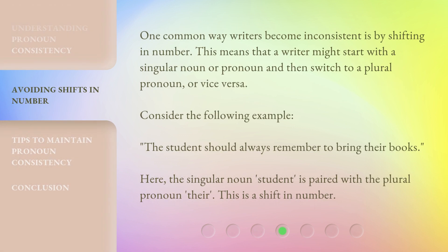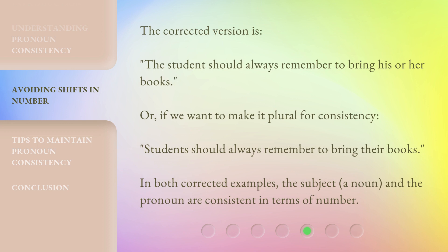One common way writers become inconsistent is by shifting in number. This means that a writer might start with a singular noun or pronoun and then switch to a plural pronoun, or vice versa. Consider the following example: 'The student should always remember to bring their books.' Here, the singular noun 'student' is paired with the plural pronoun 'their' — this is a shift in number. The corrected version is: 'The student should always remember to bring his or her books.' Or, if we want to make it plural for consistency: 'Students should always remember to bring their books.' In both corrected examples, the subject noun and the pronoun are consistent in terms of number.